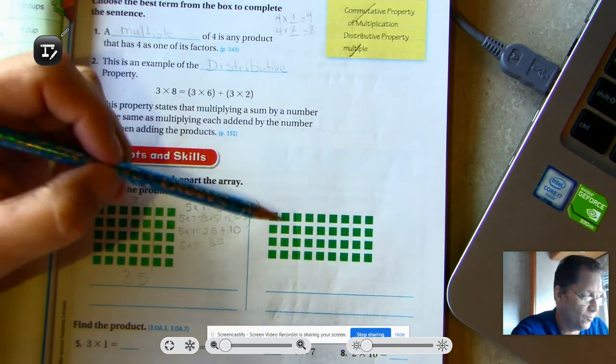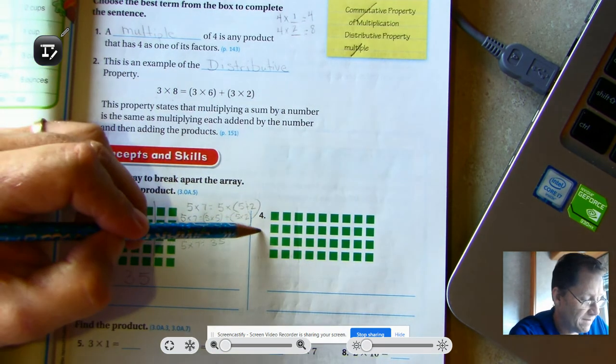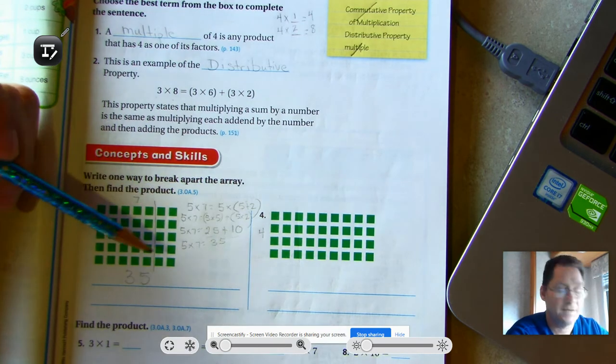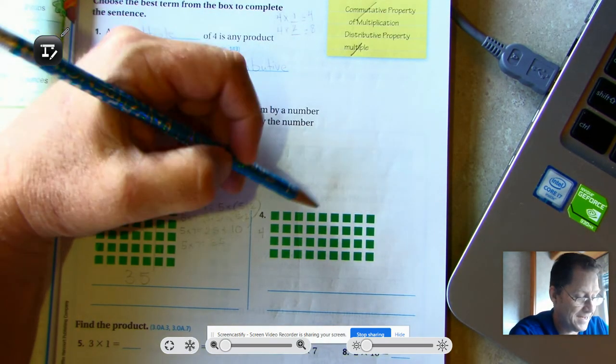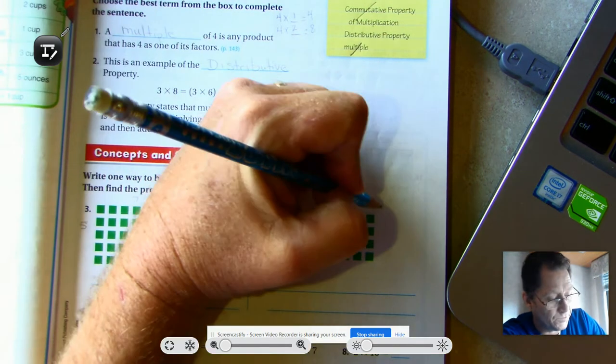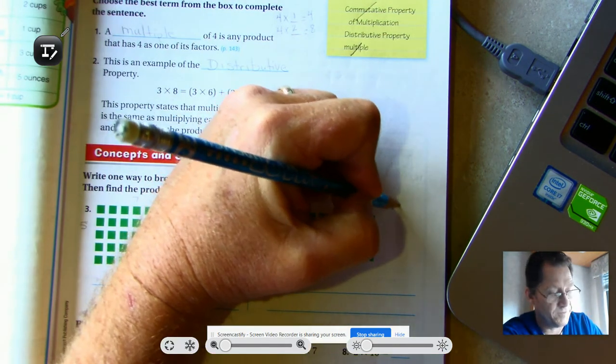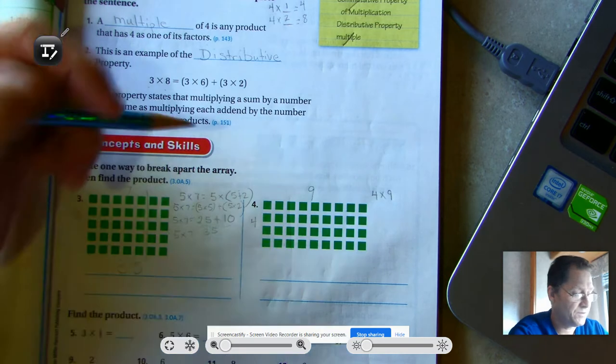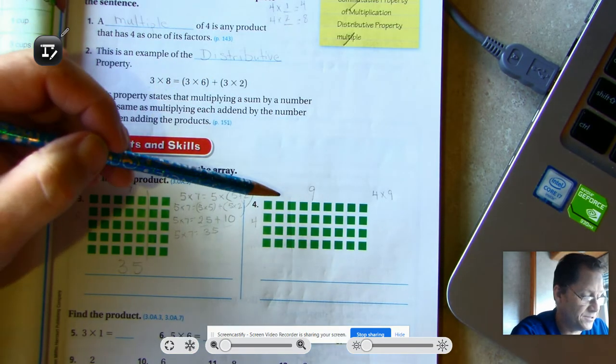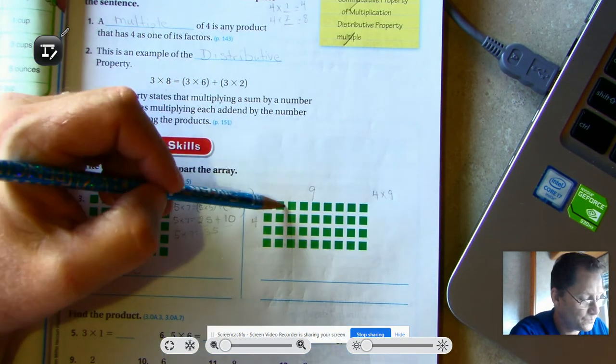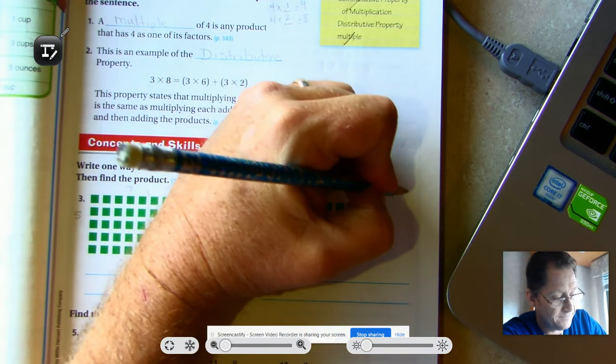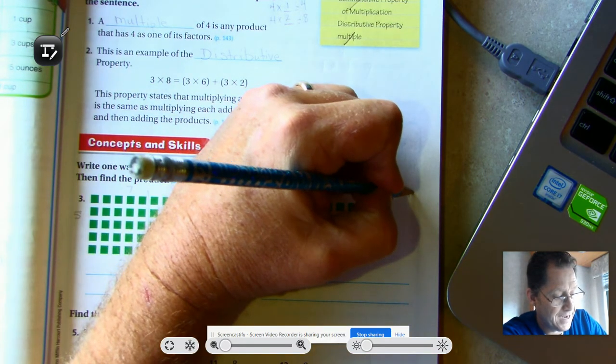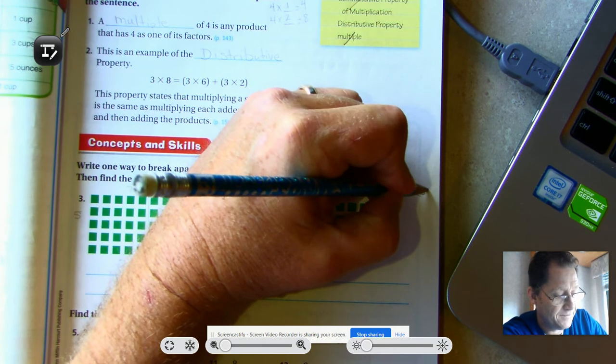And number four. I see we have four rows. And in each row there are two, four, six, eight, nine. So our original problem would be four times nine. So how can we split that up into making it easier to do? I would split mine into four times the sum of five plus four.